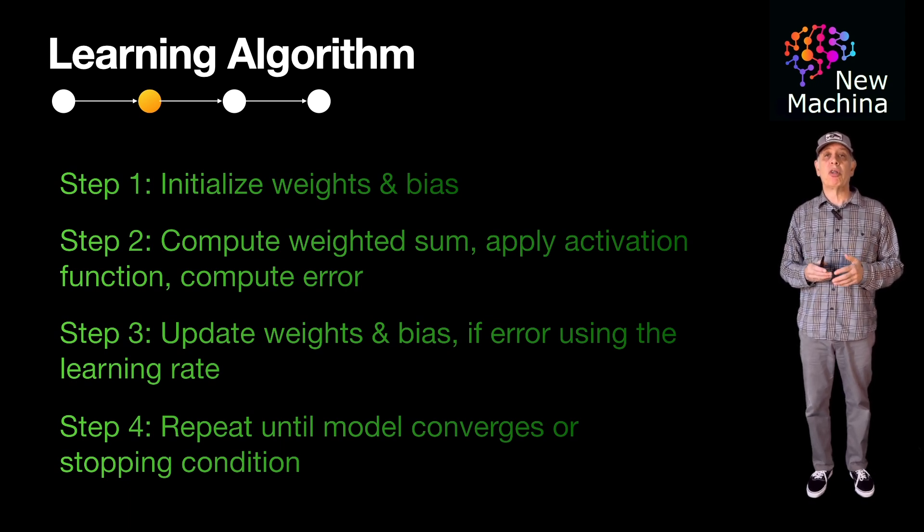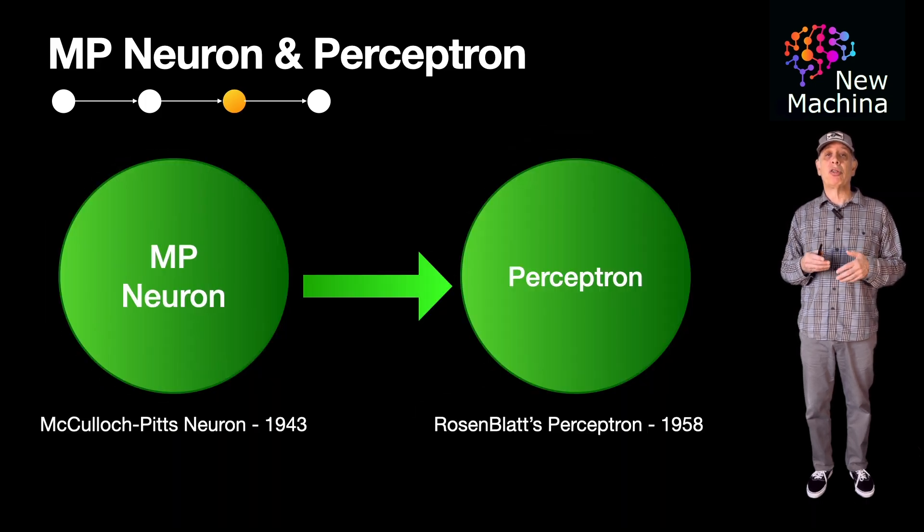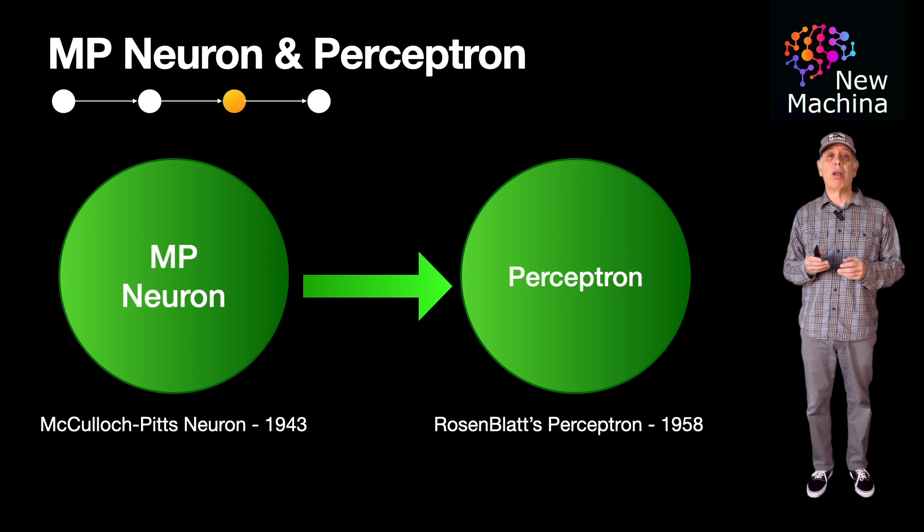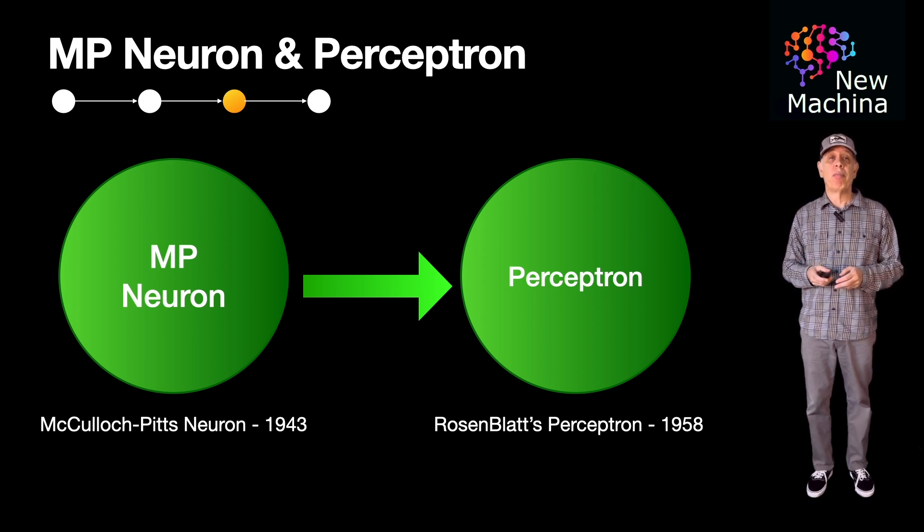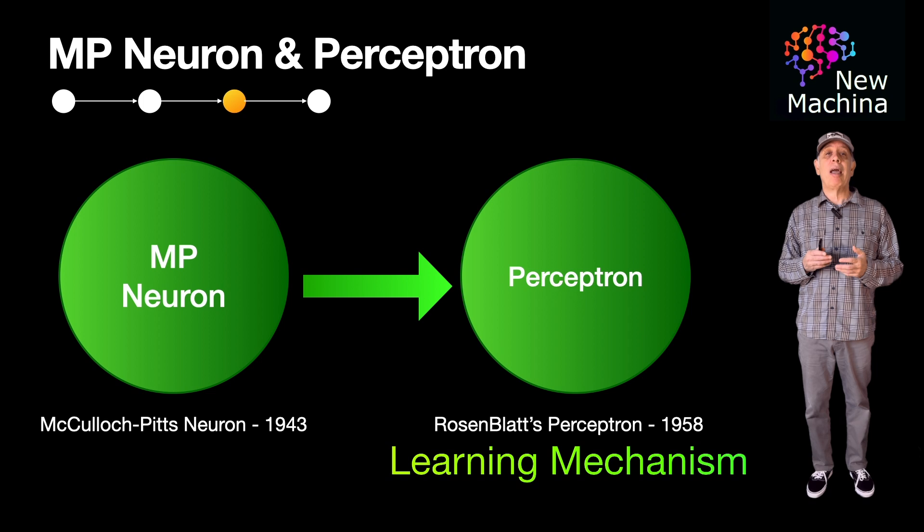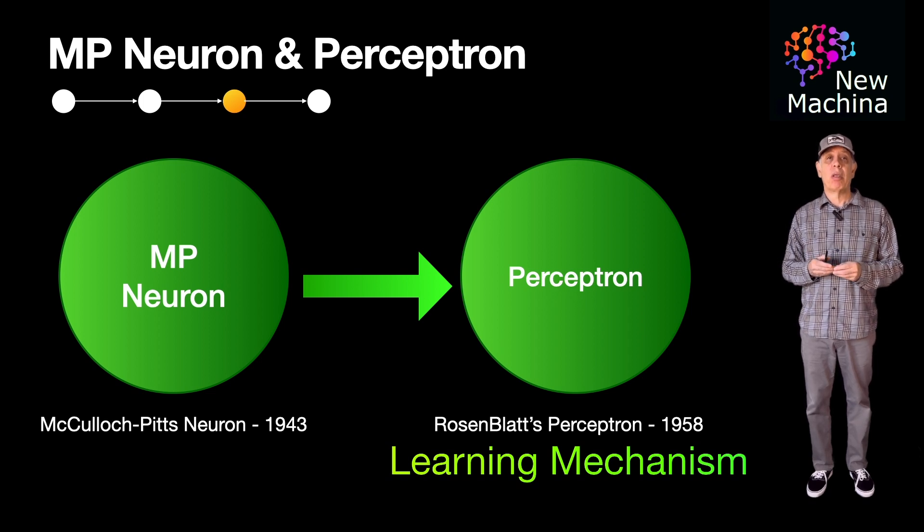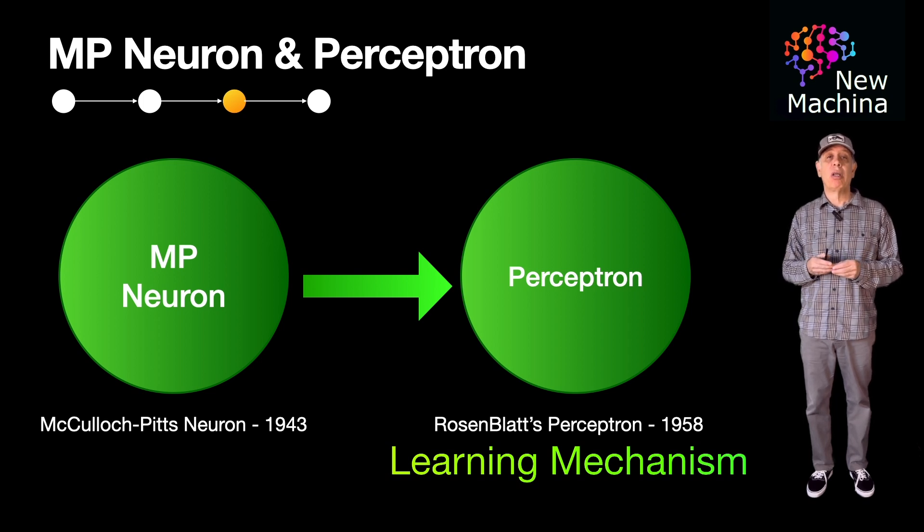Rosenblatt's perceptron was not the first artificial neural model. Rosenblatt was inspired by McCulloch-Pitt's Neuron, also known as the MP Neuron, which was a simpler model introduced in 1943. Rosenblatt's perceptron is a direct extension of this model. The key difference is that Rosenblatt's perceptron introduced a learning mechanism which the MP Neuron model lacked. Rosenblatt's perceptron builds on the MP Neuron to solve more practical problems like pattern recognition and classification.